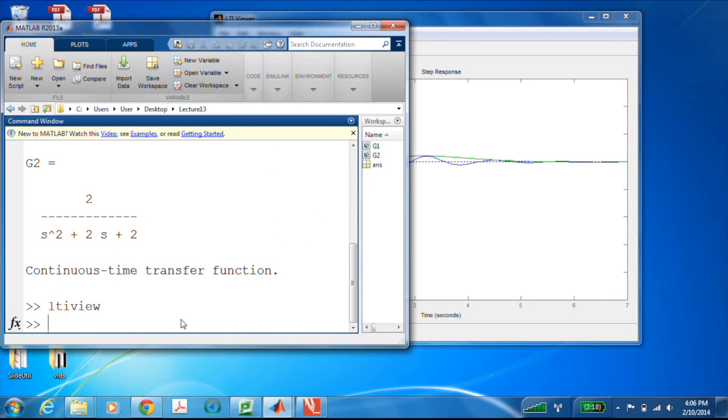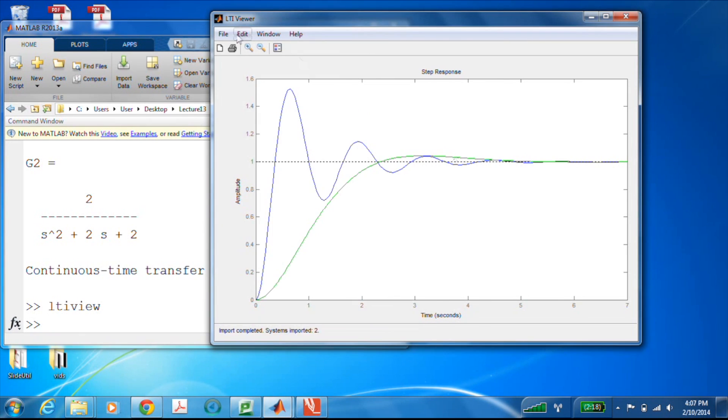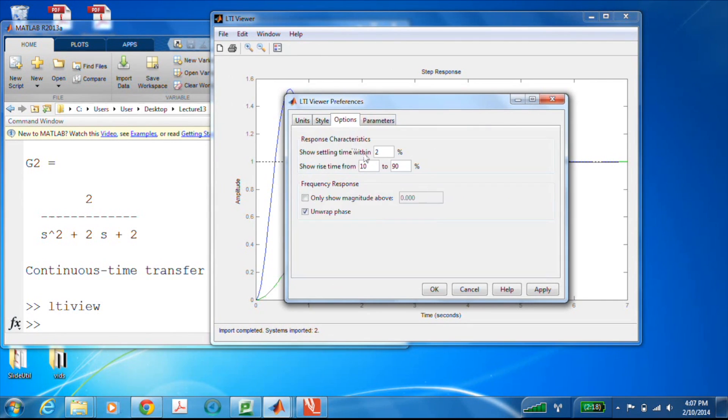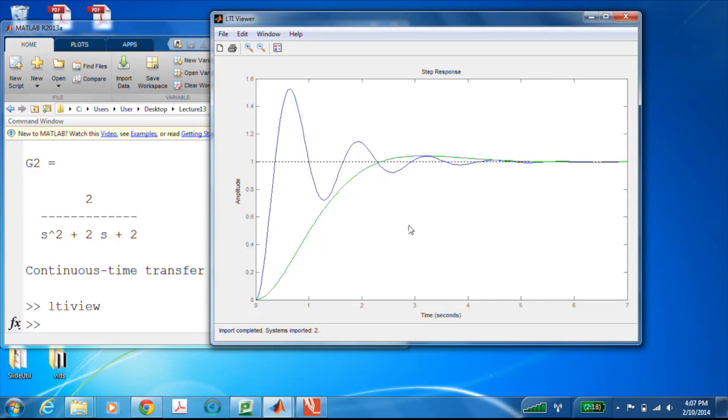Now let's take a look at the rise time. Or no, let's do the settling time first. The settling time for those two transfer functions according to our previous calculations was going to be the same at 4.6. Now before I actually pull that up on this plot, I'm going to go into viewer preferences, options, and change the default settling time to the 1% settling time, because that's what our formula was based on.